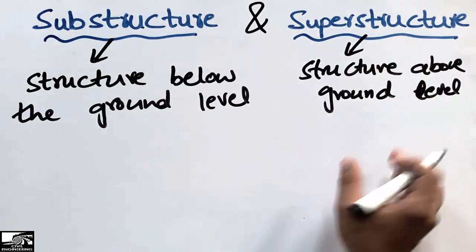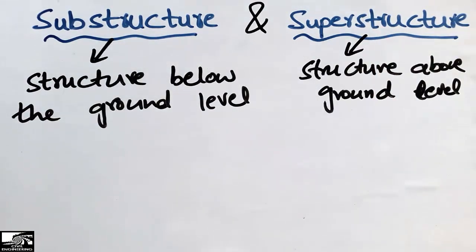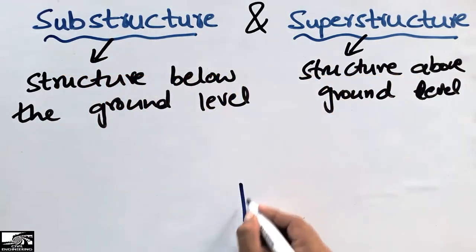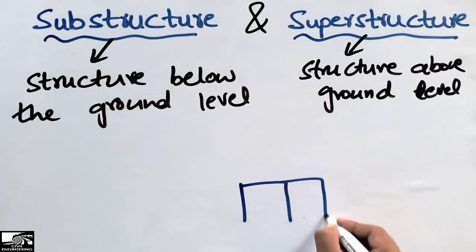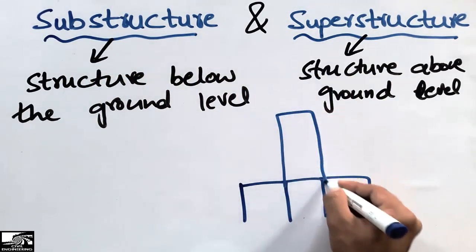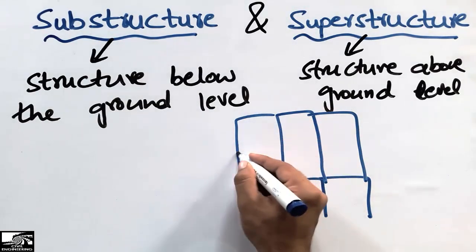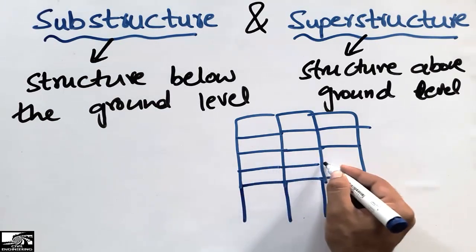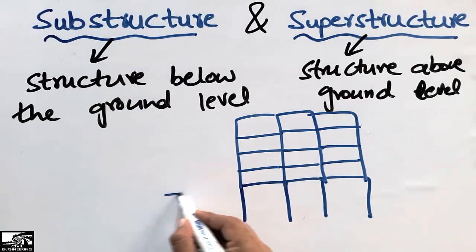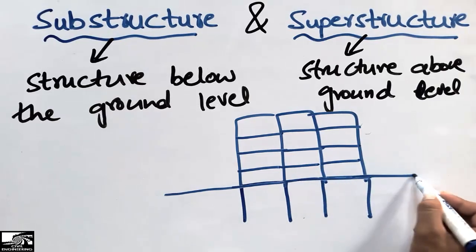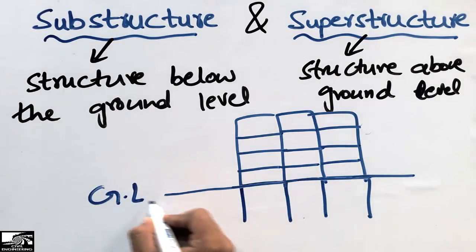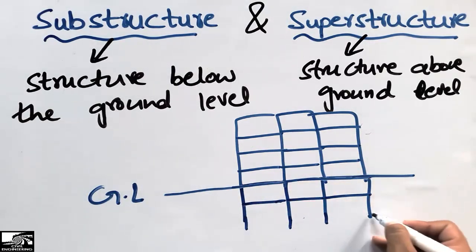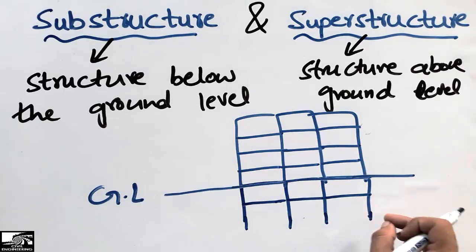To explain the difference with an example, let's consider a multi-story building. This building has different floors. Here we can see the ground level of the building, and below it there may be basement floors — let's say in the basement we have two floors.